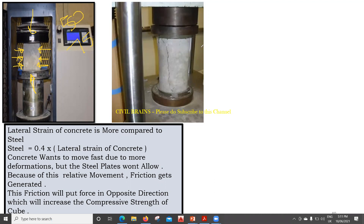Similarly, in the cylinder, the same thing happens — a force P is applied. But here also, the same plate-end effect occurs. This friction effect is called the plate-end effect because it happens due to the plate. So in the cylinder as well, the same phenomena applies since we have the same plate setup.